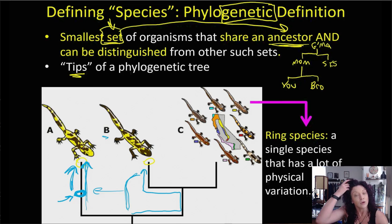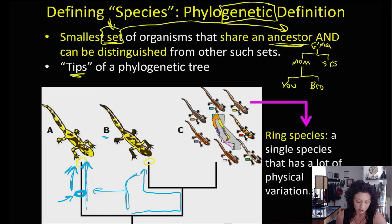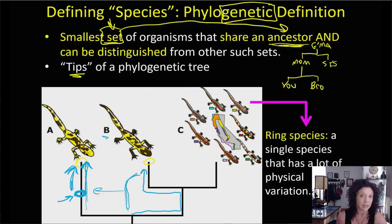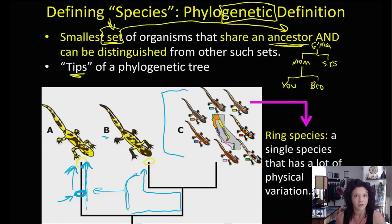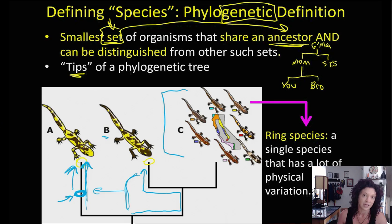Occasionally you will see what's called a ring species — a single species that has a huge amount of physical variation. This is an example of how morphology, or physical appearance, can lie to you about relationships. All of these California salamanders look very different from each other, but in fact they're all each other's closest relatives — they're all the same species, even though they have a lot of physical variation.